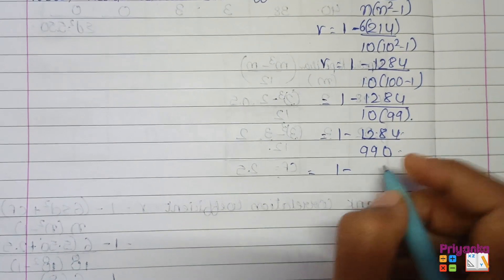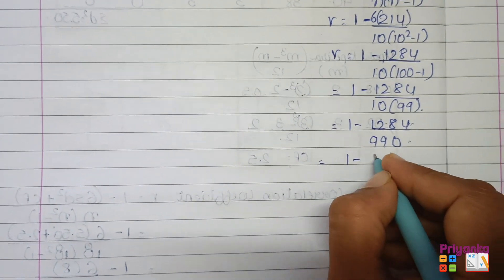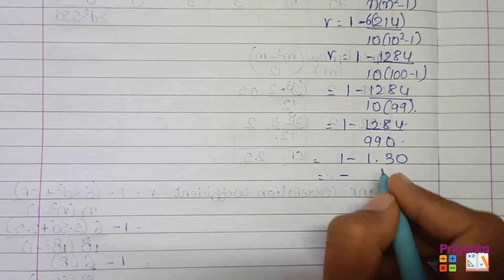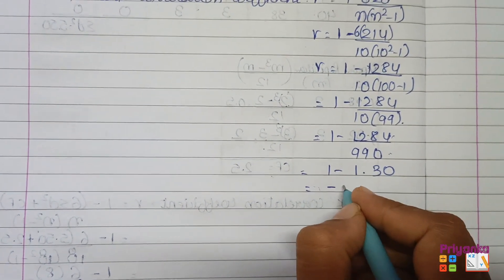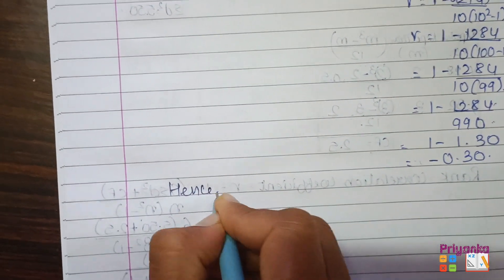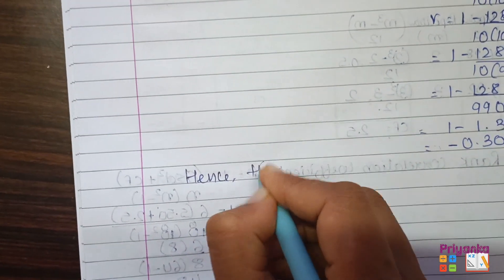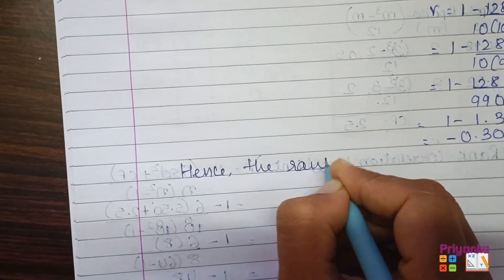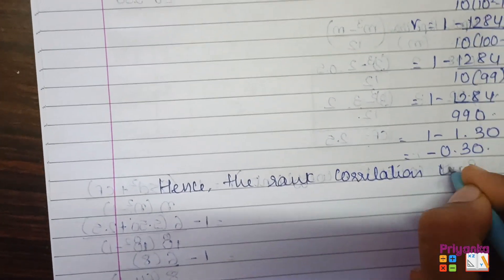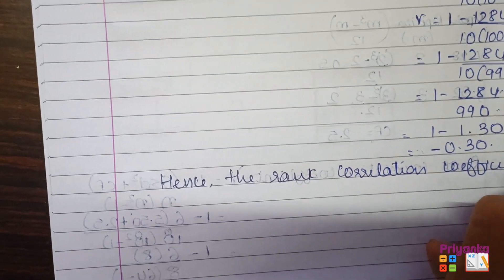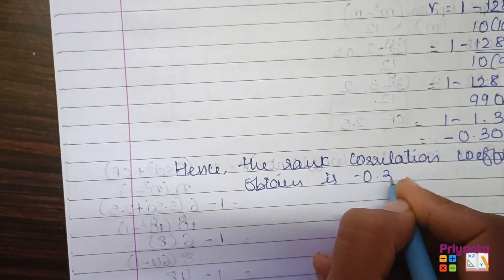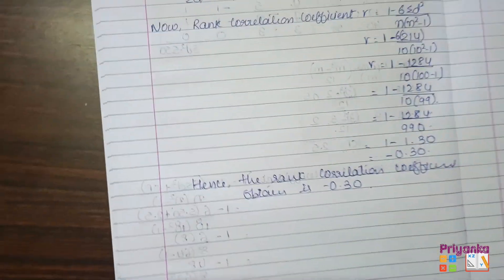Remove the calculation of this, you will get 1.30. And here the answer comes in minus because this value is more than this, 0.30. So write down, hence the rank correlation coefficient obtained is minus 0.30. That is the answer.